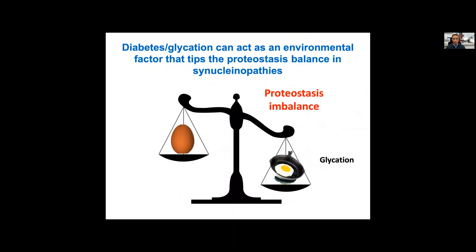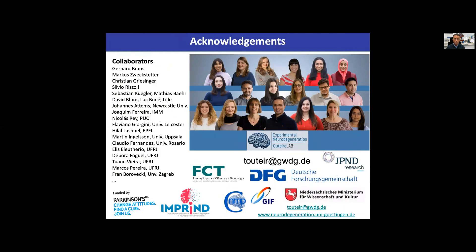This is where we're going, because we think it's really important and could give us clues for possible targets for therapeutic intervention. We think diabetes or glycation could constitute one of these environmental factors that could tip the proteostasis balance in synucleinopathies, and probably in other neurodegenerative diseases as well. It's important to understand how glycation and other post-translational modifications alter protein structure and function in order to come up with better ideas for therapeutic targets. With this I would like to close, thanking members of my lab, collaborators, sources of funding, and of course, you for your attention.